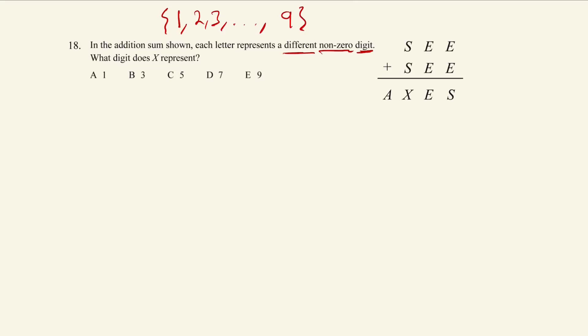We can actually immediately establish what A is. The reason being is because if we think about what this is saying, so this is saying SEE plus SEE. So a number plus itself gives us a four digit number. So a three digit number plus a three digit number equals a four digit number.